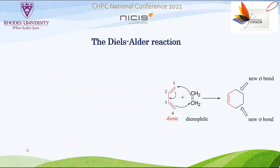To begin with, let us note that the Diels-Alder reaction is a 4+2 cycloaddition reaction that occurs between a conjugated diene and a dienophile, and leads to the formation of a six-membered ring with up to four stereogenic centers.